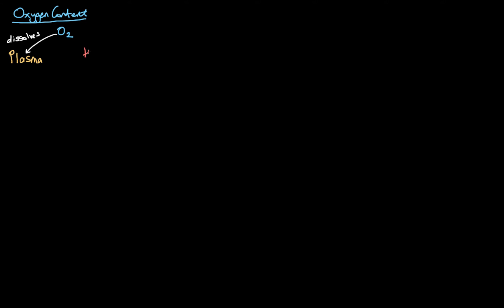The other thing it does is it chemically combines with hemoglobin. The hemoglobin is inside the red blood cells, and the red blood cells are floating through the plasma. So when we calculate our oxygen content, we need to add all the oxygen that's bound to hemoglobin to all of the oxygen that is dissolved in the plasma — and that gives us our oxygen content.